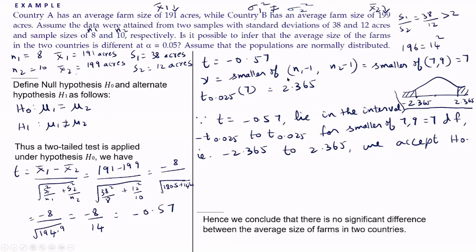This is how we proceed using the t-test for two independent samples when the population variances are assumed to be unequal. I hope this video was useful. In my next video I will solve questions from the CBSE handbook for inferential statistics. Please subscribe to my channel — thank you for watching and see you in the next video.